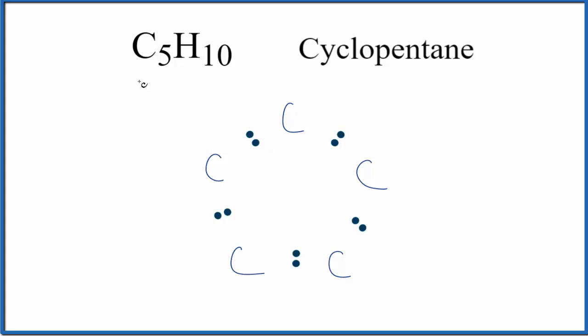Carbon is in group 14 on the periodic table. It has four valence electrons, and we have five carbon atoms. Hydrogen is in group 1, it has one valence electron. We have 10 of those. So 20 plus 10, we'll have 30 total valence electrons for this cyclopentane Lewis structure.